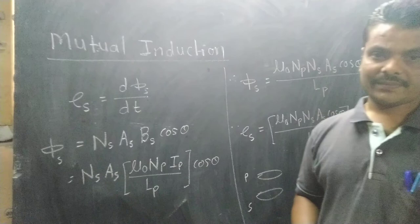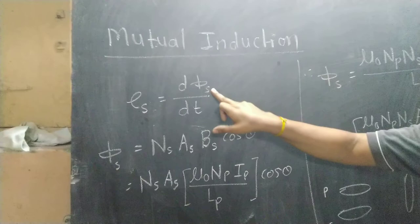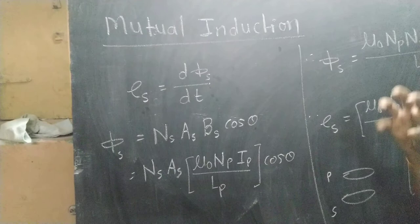The law states E is equal to dΦ/dt. Therefore, the EMF induced in the secondary coil is equal to the rate of change of flux in the secondary coil, that is dΦs/dt. This is the law of Electromagnetic Induction.